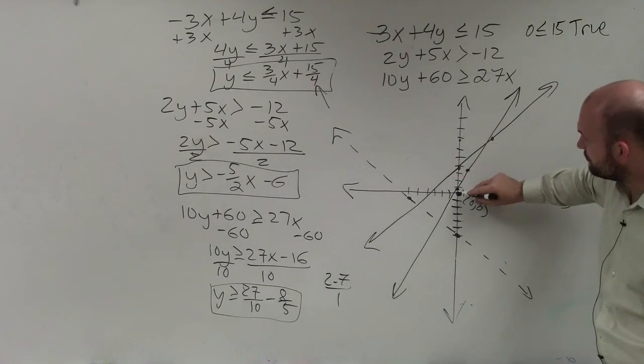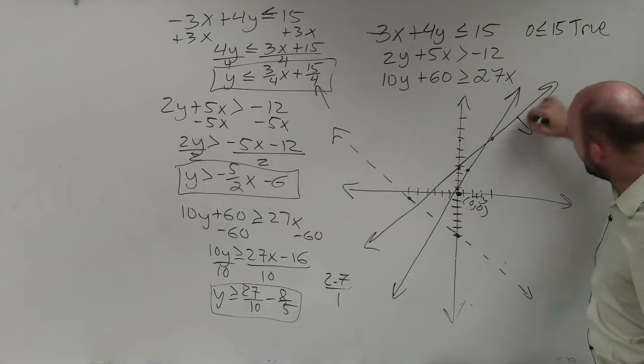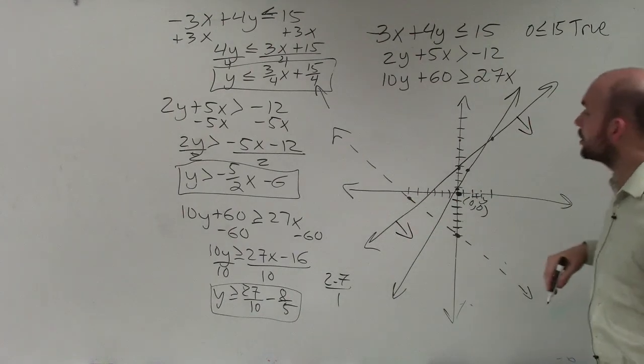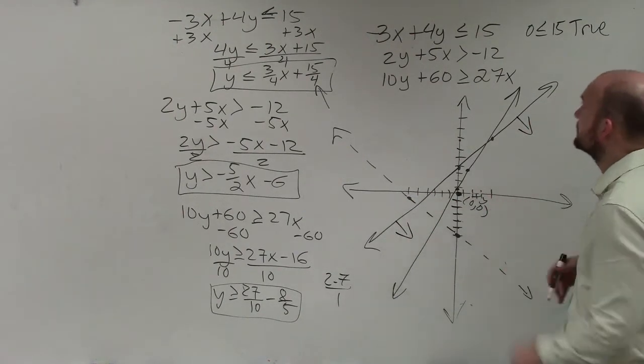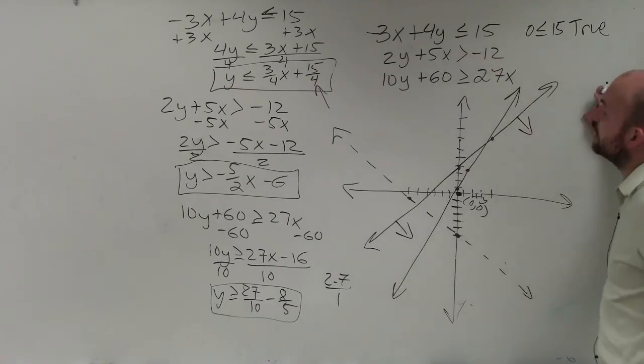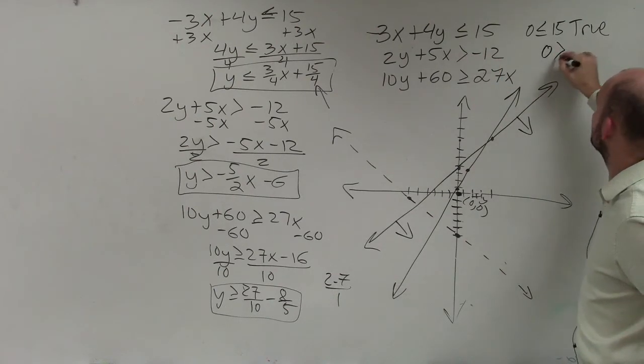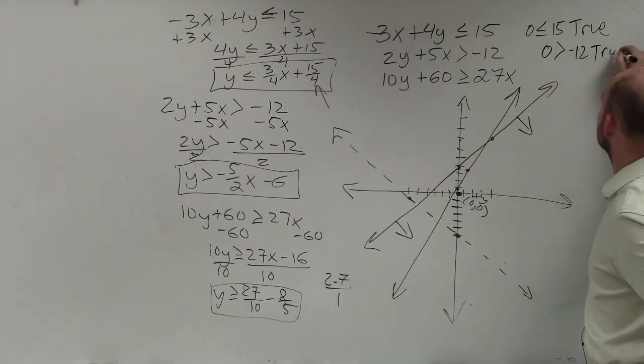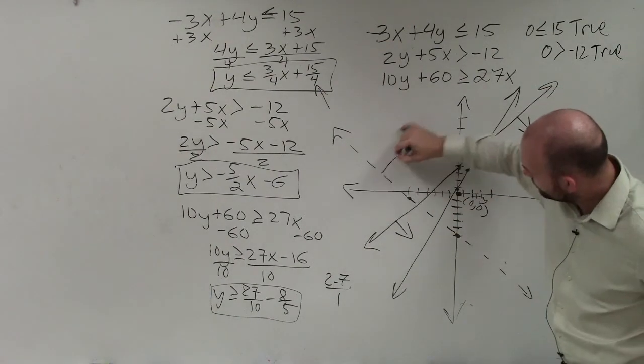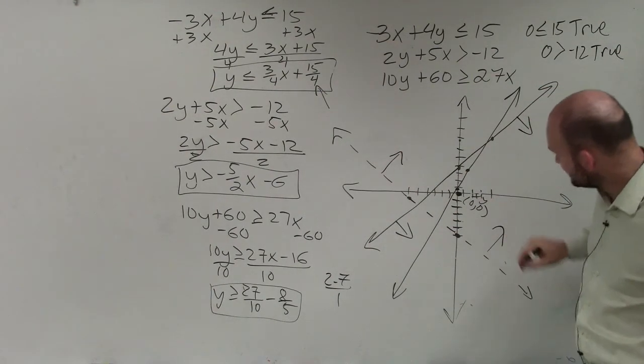Therefore, since it's true and my test point is below, all points below my line are going to be true. So I'm going to be shading down below. Now, let's put 0 in for x and y over here. And I have 0 is greater than negative 12, which is true again for my second boundary line. So therefore, I'm going to shade towards my test point.